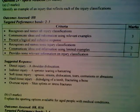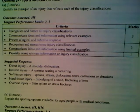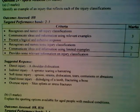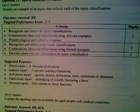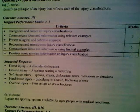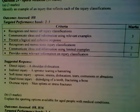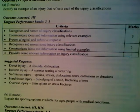General feedback from markers was that this question was answered very well overall, with most students able to receive full marks. The question required identification of an injury example across each classification — direct, indirect, overuse, soft, and hard tissue. Importantly, examples needed to be clear and not ambiguous. For instance, saying an indirect injury equals a broken clavicle is insufficient — a better response would be: indirect injury, broken clavicle as a result of falling on an outstretched arm in basketball, because for an indirect injury the point of impact is away from the injury site.